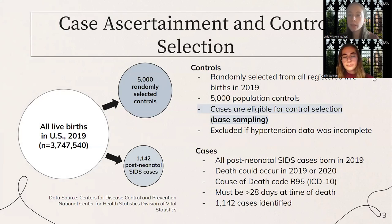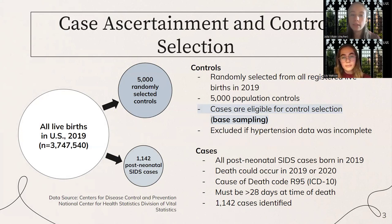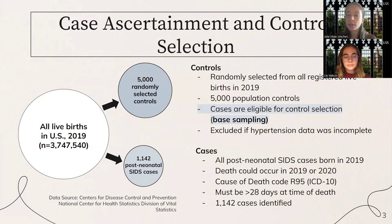We used a case-control study design in this project. Our controls were randomly selected from all registered live births in 2019, and our data came from the CDC natality birth report. We selected 5,000 population controls, which we excluded if hypertension data was incomplete. Our cases were also eligible for control selection in this study design, which is called base sampling. Our cases were all post-neonatal SIDS cases born in 2019, although the death could occur in 2019 or 2020, and all cases were greater than 28 days at time of death. We were able to identify about 1,100 cases in this cohort.